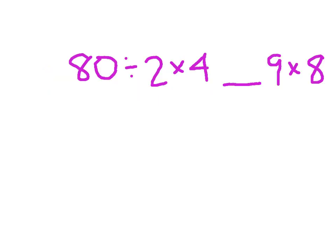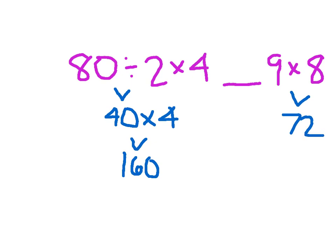For this problem here, much the same way, I follow my order of operations, 80 divided by 2 first, which is 40, times 4, which is 160. And then I know that 8 times 9 is 72, so that 160 is greater than 72.